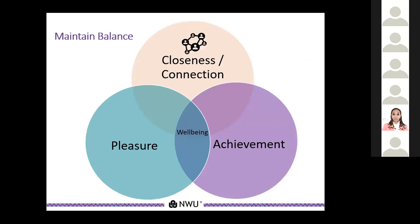Psychologists think that wellbeing comes from living a life with a balance of activities that give you feelings of pleasure, achievement, and closeness. With your current situation, many of your normal routines and daily activities have changed. It can be helpful to organise a daily routine that involves a balance between activities that give you a sense of achievement, help you feel close and connected with others, and activities that you can do just for pleasure.